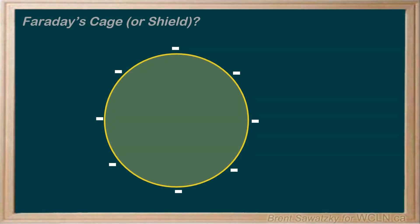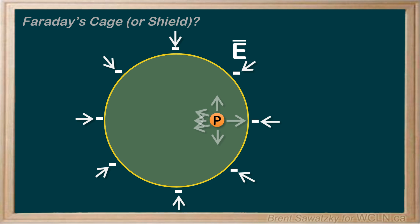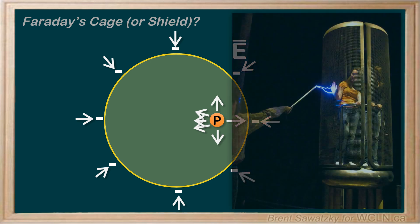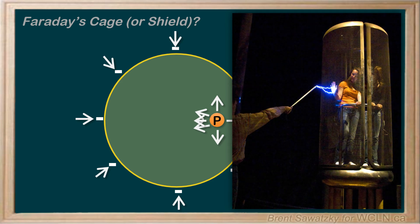In this tutorial, we started with the concept of charge distribution within a conductor. Understanding that the charge distributes itself on the surface of the conductor leads to the understanding that electric fields cancel each other out at points within the conductor. And this leads to the application of Faraday's cage, which is used all around us in strategic locations.